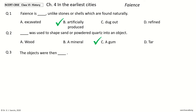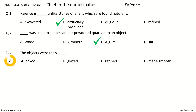Next question. The objects were then dash. The options are: baked, glazed, refined, made smooth. And the answer is glazed. So, the objects were then glazed.